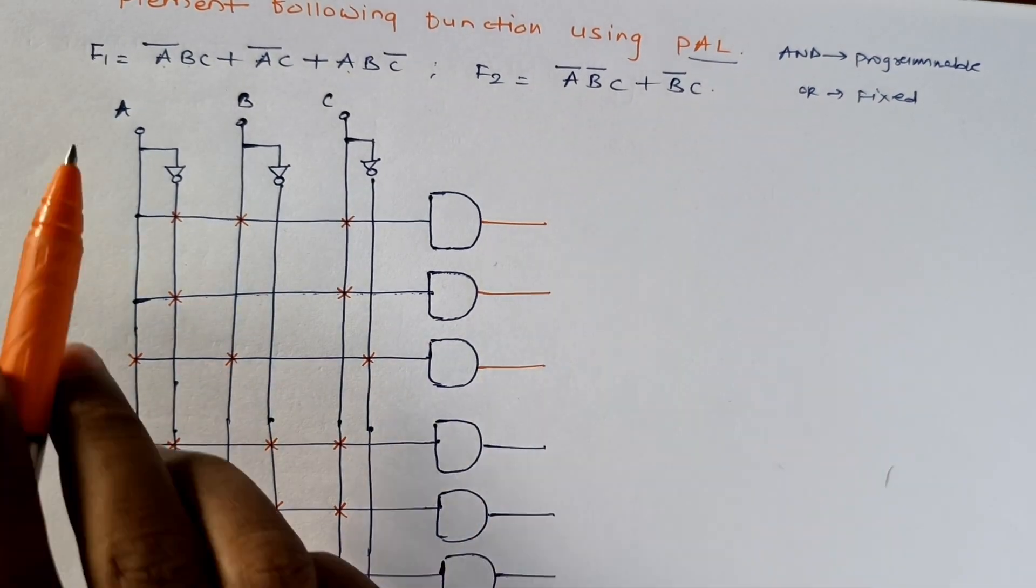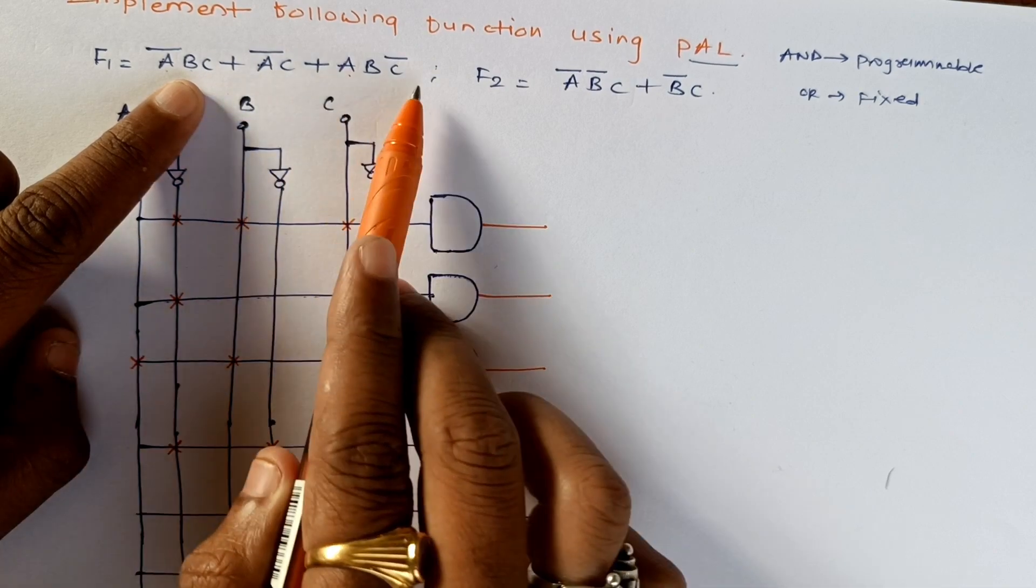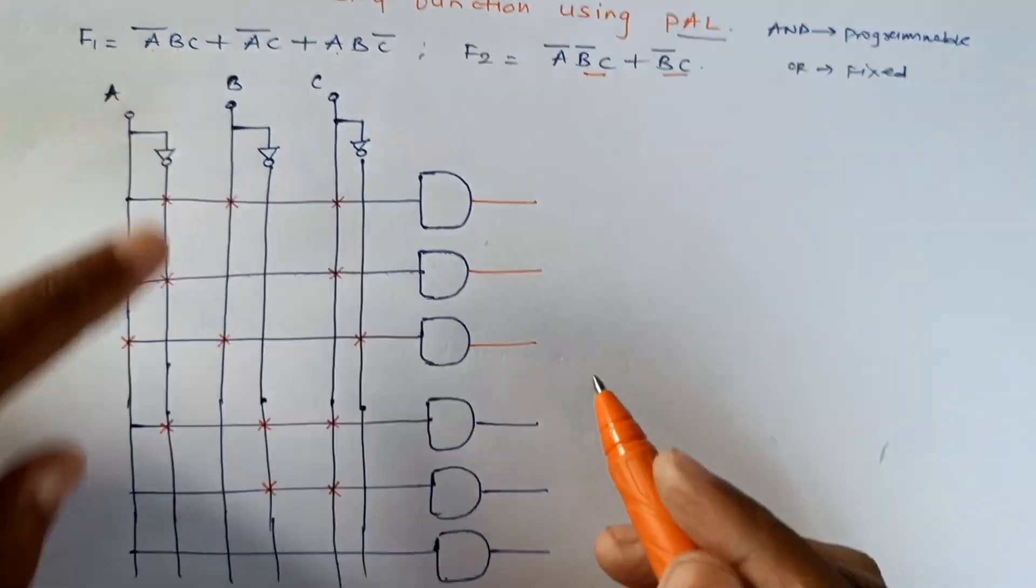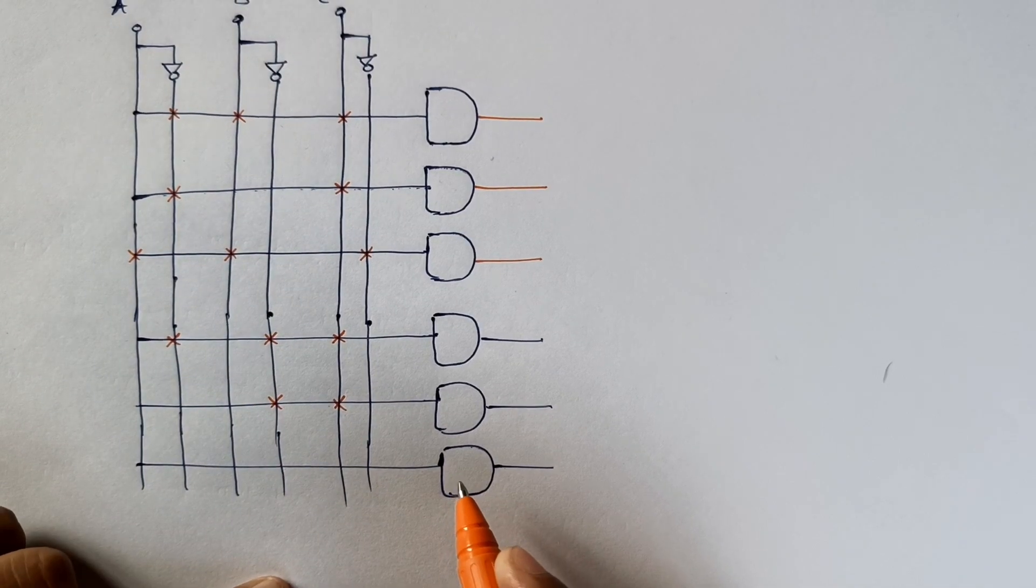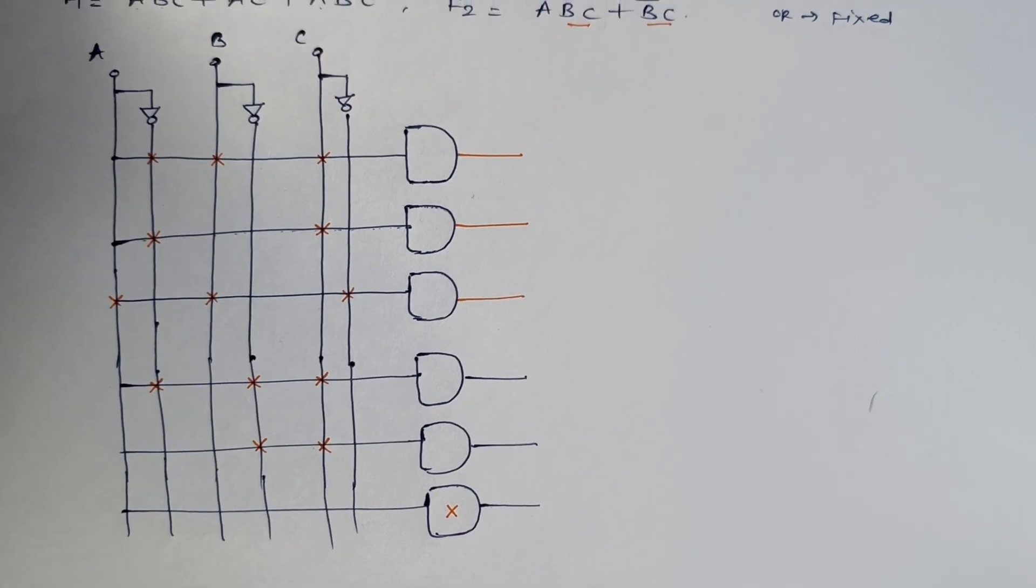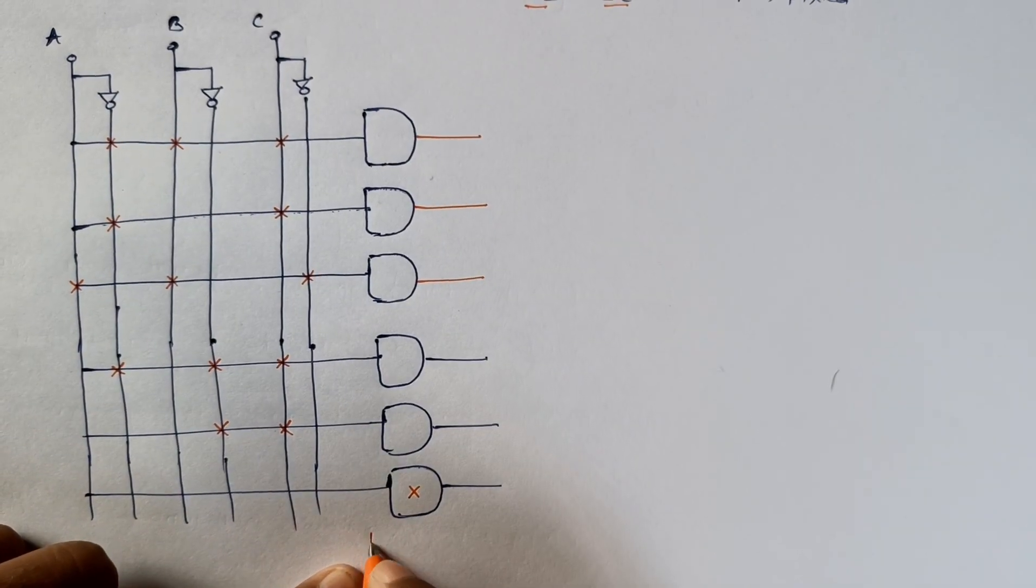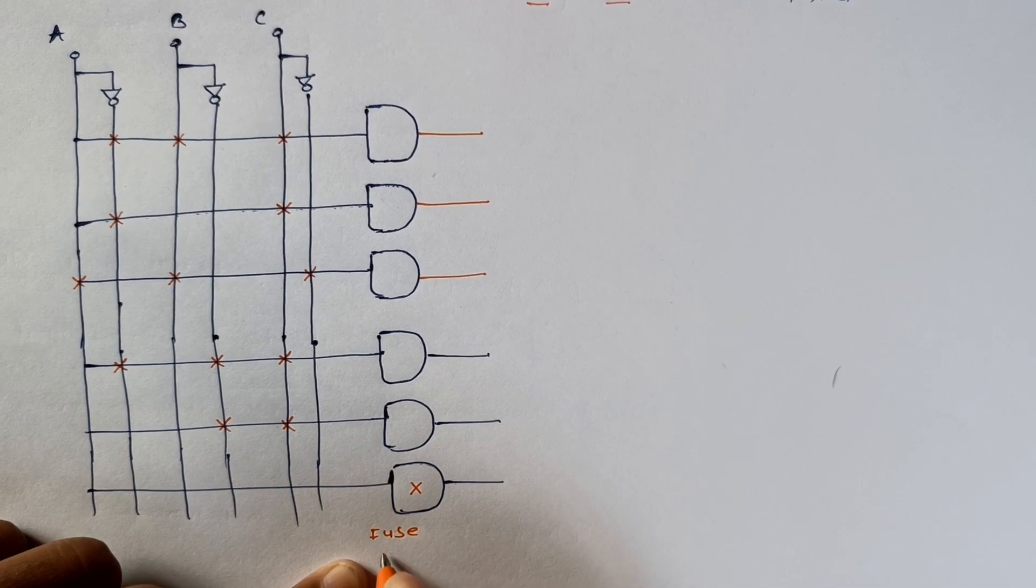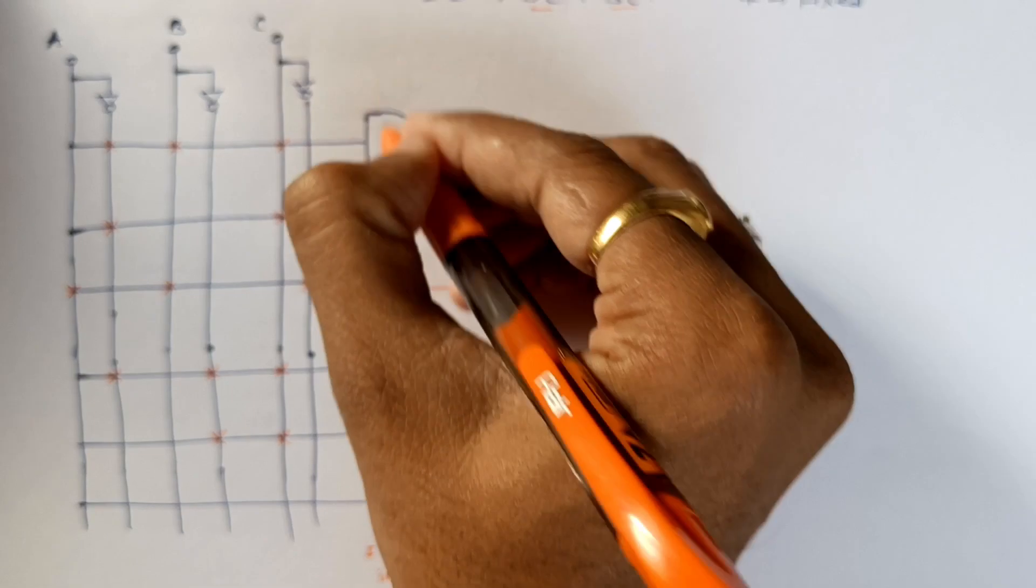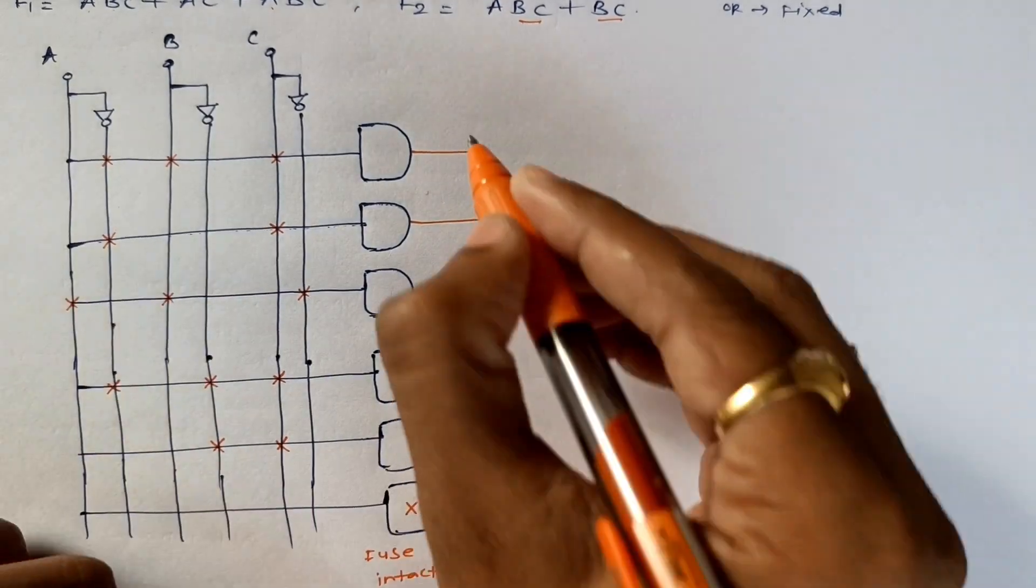In general, we need three AND gates for almost all of this. But here we have two products to do, and the third AND gate is not connected. That means it is not connected, fuse intact, fuse intact. That means it is a programmable AND gate.